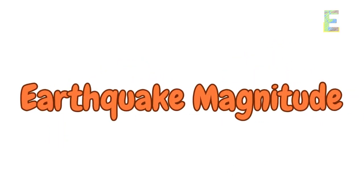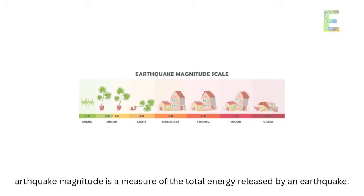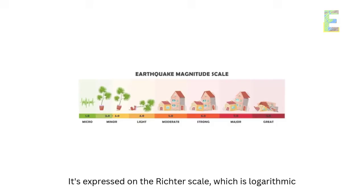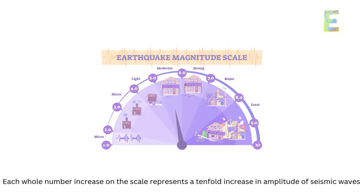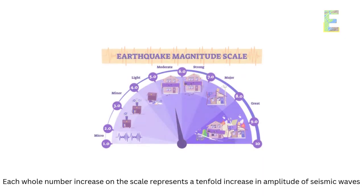Earthquake magnitude is a measure of the total energy released by an earthquake. It's expressed on the Richter scale, which is logarithmic. Each whole number increase on the scale represents a tenfold increase in amplitude of seismic waves.